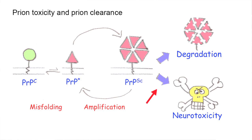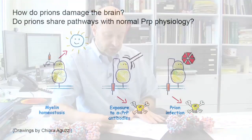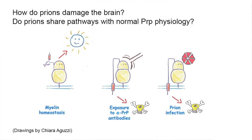So, how do prions damage the brain? What I want to discuss today is a hypothesis we formulated a couple of years ago, and that we have been trying to address with the present work. The hypothesis is that pathological prions — infectious prions — may share pathways together with the normal physiology of the prion protein.